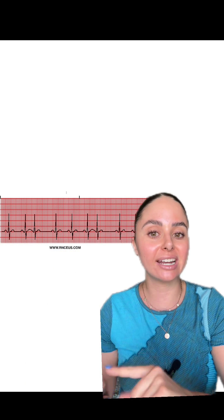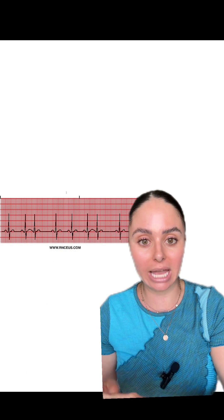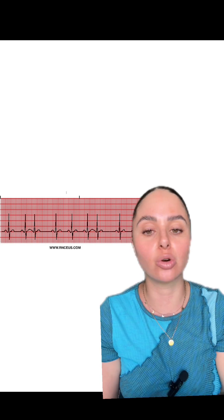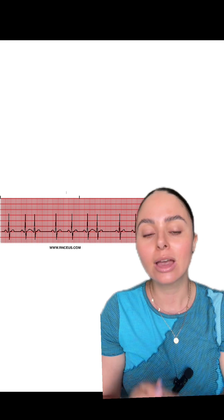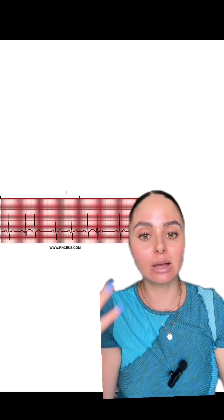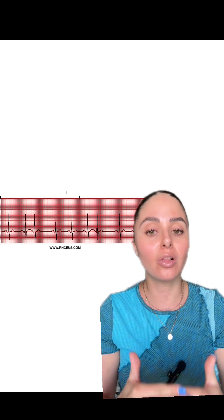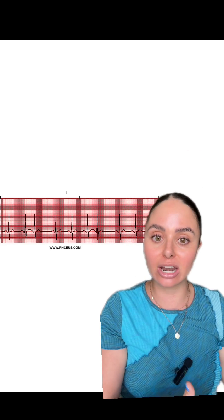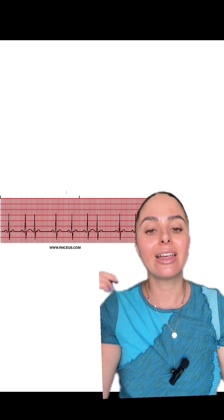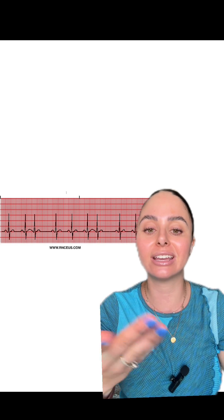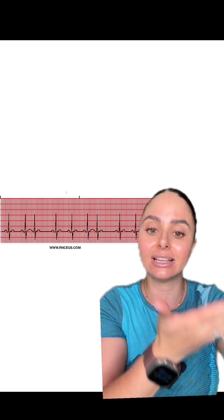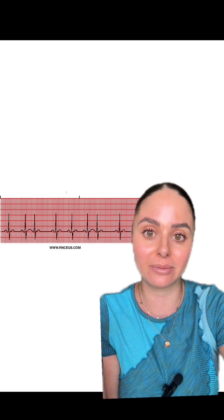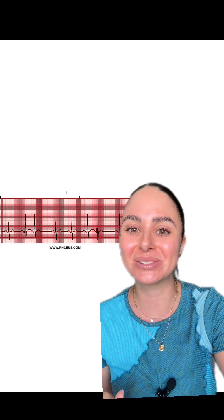Patients who have sinus arrhythmias typically have them persistently — they don't really go away. Whereas with PACs, yes, some patients have so many that it's constant, but a lot of times patients can get PACs and then they go away and suddenly you have a normal regular heart rate again. That's another good indication that it's a PAC and not a sinus arrhythmia. I hope that's helpful — let me know if you have any questions.